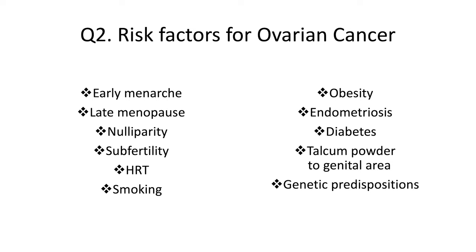Question 2: What are the risk factors for ovarian cancer? A simple rule to remember is that the greater the number of ovulation cycles in the lifetime of a woman, the greater the risk of ovarian cancer. Risk factors include early menarche, late menopause, nulliparity, subfertility, use of hormone replacement therapy, smoking, obesity, endometriosis, diabetes, and the use of talcum powder in the genital area.